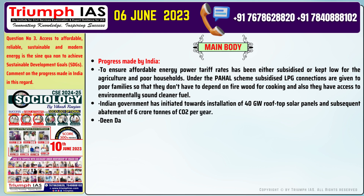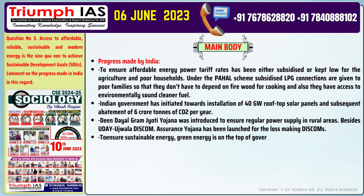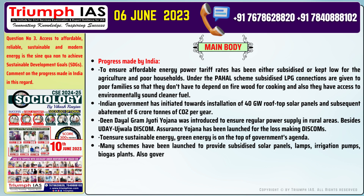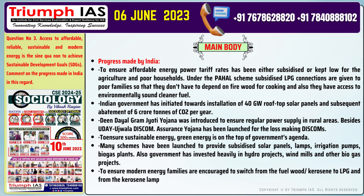Point 3: Deen Dayal Gram Jyoti Yojana was introduced to ensure regular power supply in rural areas. Besides, the UDAY (Ujwal DISCOM Assurance Yojana) scheme has been launched for loss-making DISCOMs. Point 4: To ensure sustainable energy, green energy is at the top of the government's agenda. Point 5: Many schemes have been launched to provide subsidized solar panels, lamps, irrigation pumps, and biogas plants. The government has also invested heavily in hydro projects, windmills, and other biogas projects. Point 6: To ensure modern energy, families are encouraged to switch from fuel-wood and kerosene to LPG and from kerosene lamps to LEDs.